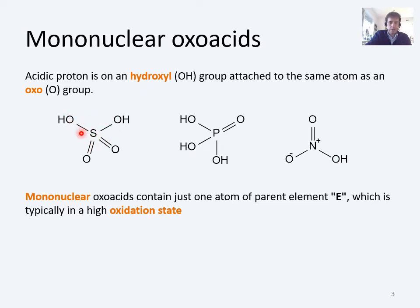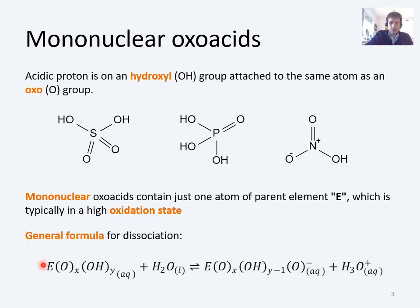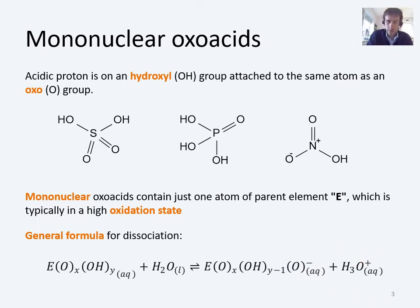All of these parent elements are going to be in high oxidation states — for example, sulfur is in a plus 6 oxidation state. The general form for dissociation is the same as we've seen already. This looks a bit more complicated with general letters, but E is just the parent element — for sulfuric acid that would be S — X is the number of oxo groups (two for sulfuric acid), and Y is the number of OH groups (also two for sulfuric acid). What happens is you reduce the number of hydroxyl groups by 1, leaving an O⁻, and you make H₃O⁺.